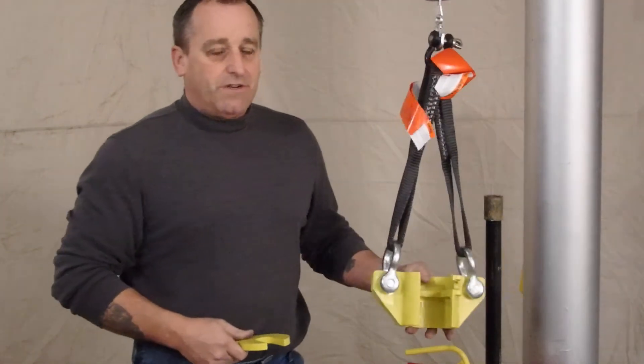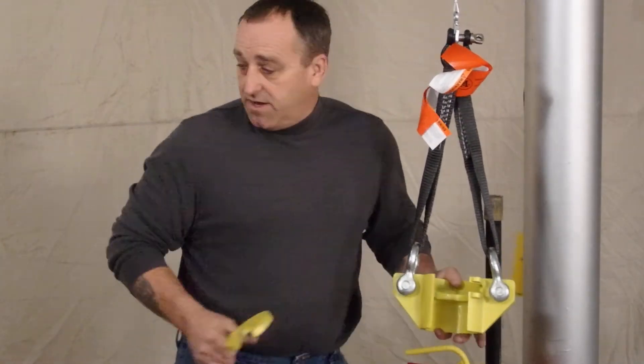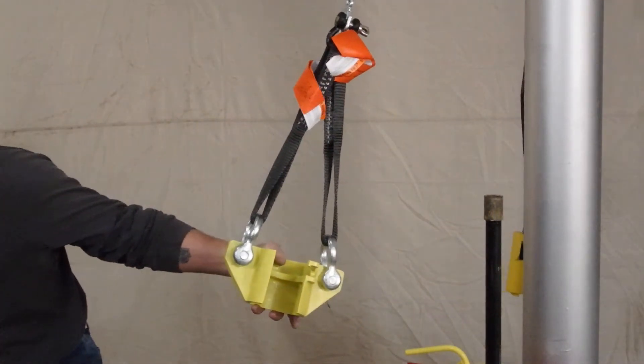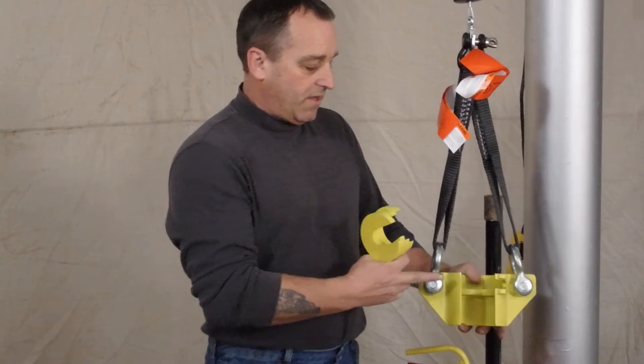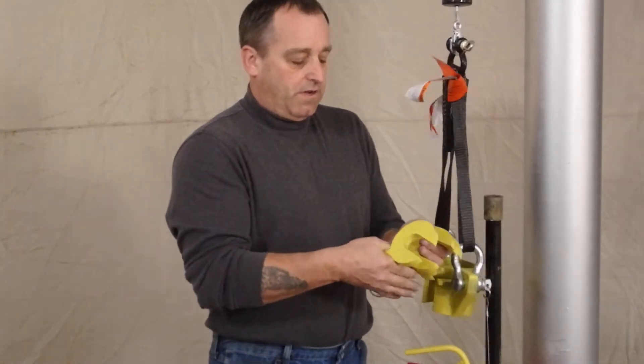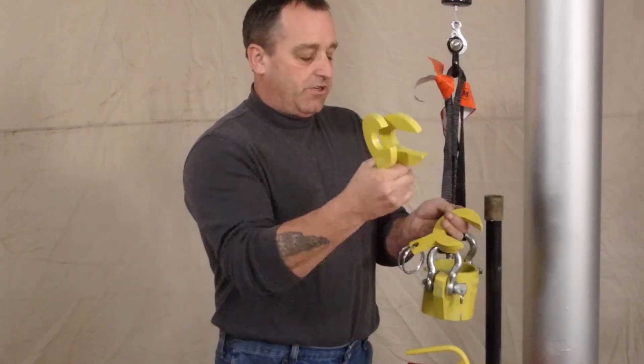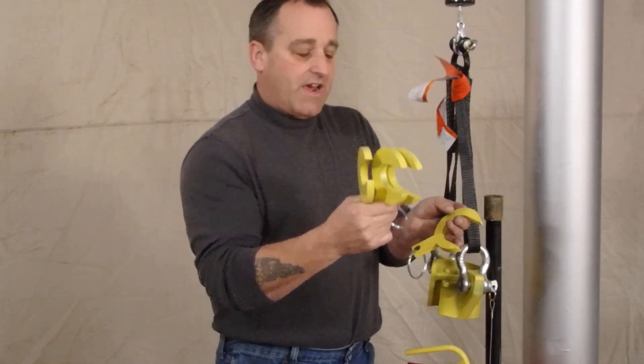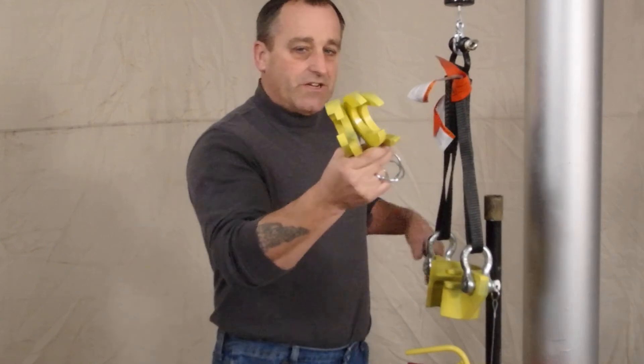When you buy this unit, you will get everything you see. You will get the body, the short slings, a one inch, an inch and a quarter, an inch and a half, and a two inch die.